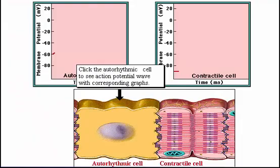Click the auto-rhythmic cell to see the action potential wave along with corresponding graphs of action potentials in an auto-rhythmic cell and a contractile cell.